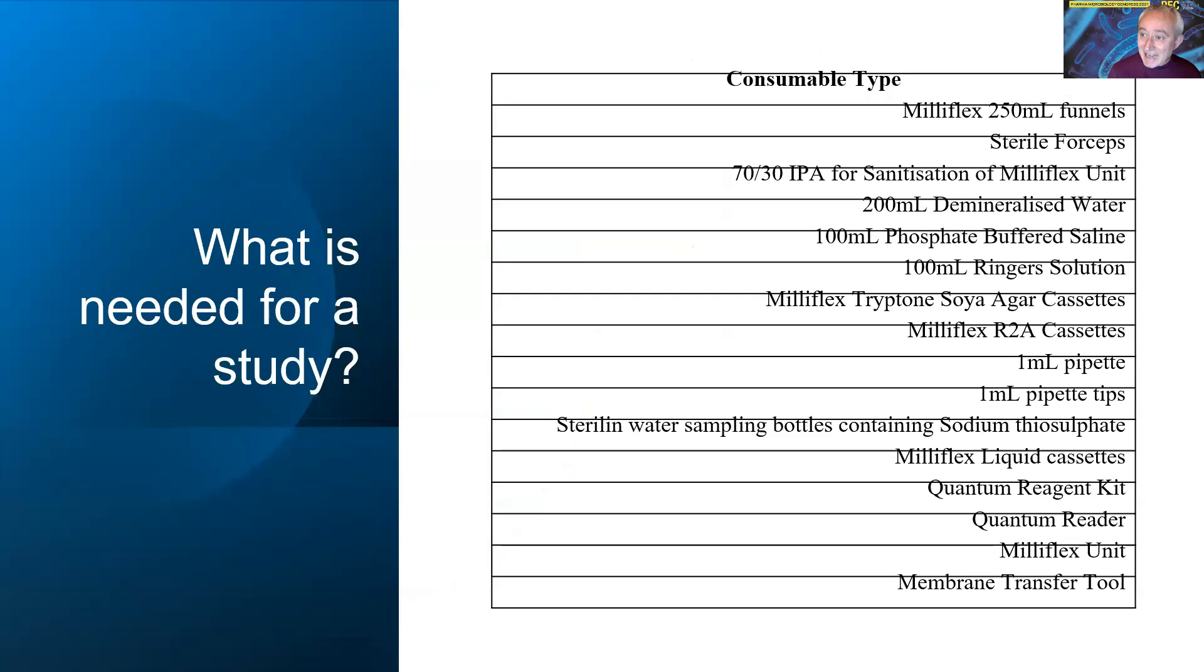To conduct any study, a protocol is required. We need to set out our aims, method, acceptance criteria, determine the number of samples, decide on what consumables we're going to use, what equipment we're going to use, the time period for the study, the number of analysts involved, and the statistical method by which we're going to analyze our data. We also need a list of consumables and equipment as shown on the slide.